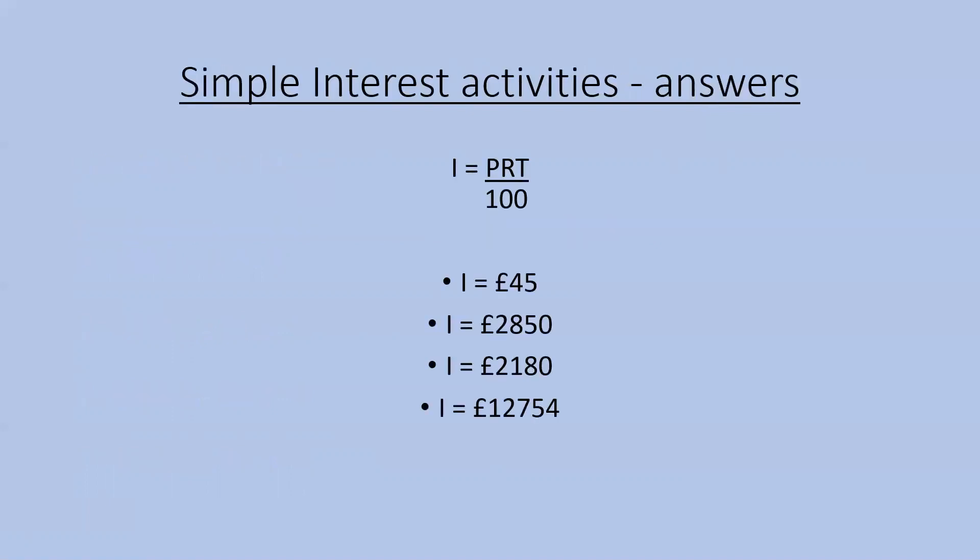And here are the answers. The interest built up on the first calculation would be £45. The interest on the second calculation would be £2,850. The interest on the third calculation would be £2,180. And the interest on the final calculation would be £12,754.